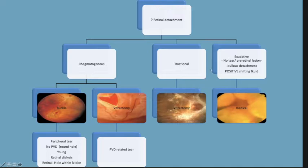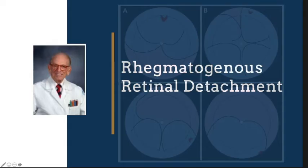As we will be discussing the comparison between buckle and vitrectomy, we should concentrate on rhegmatogenous retinal detachment, which potentially requires either vitrectomy, buckle, or probably combined surgery. The most important step in treating rhegmatogenous detachment is to find all tears and to treat all tears.